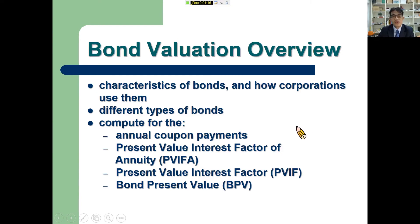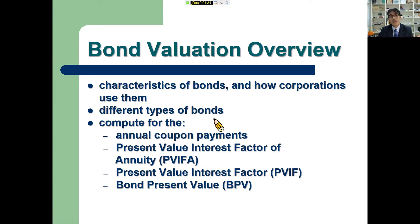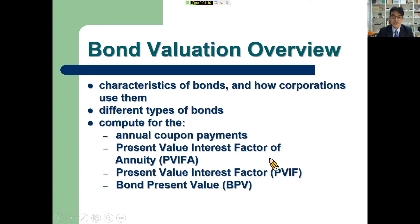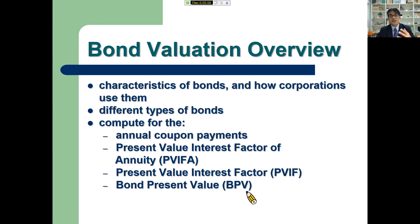In this topic we will be discussing the characteristics of bonds and how corporations use them. We will also discuss the different types of bonds — we have callable bonds, convertible bonds, and other types. And since this is a valuation topic, we will be computing annual coupon payments, present value, present value interest factor of annuity (PVIFA), present value interest factor (PVIF), and lastly the bond present value. Don't get intimidated — the computations are very manageable and I'm going to be guiding you throughout the computing process.